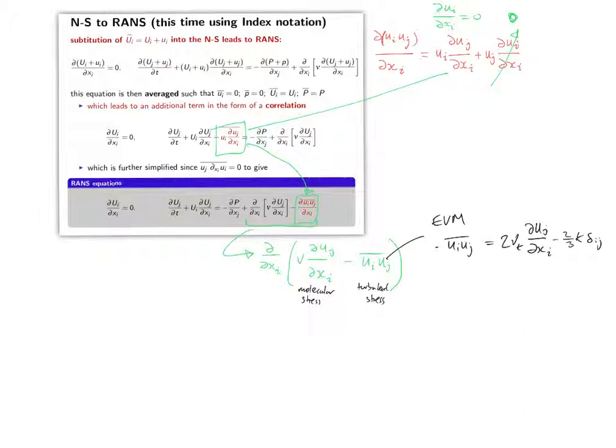As we have here, this is the simplified version, you can see that the Reynolds turbulent stress, UIUJ, is approximated using the eddy viscosity model as 2 times new T, DUDX, minus the contribution from the normal stresses, 2 thirds K.